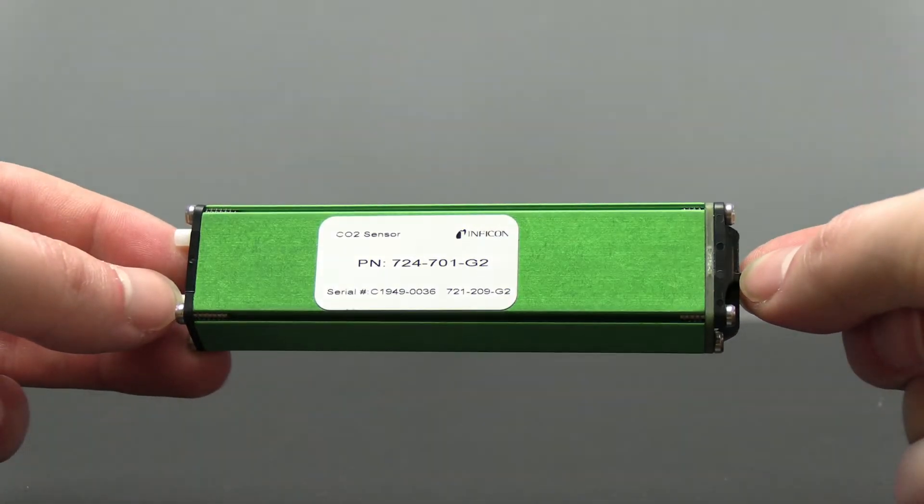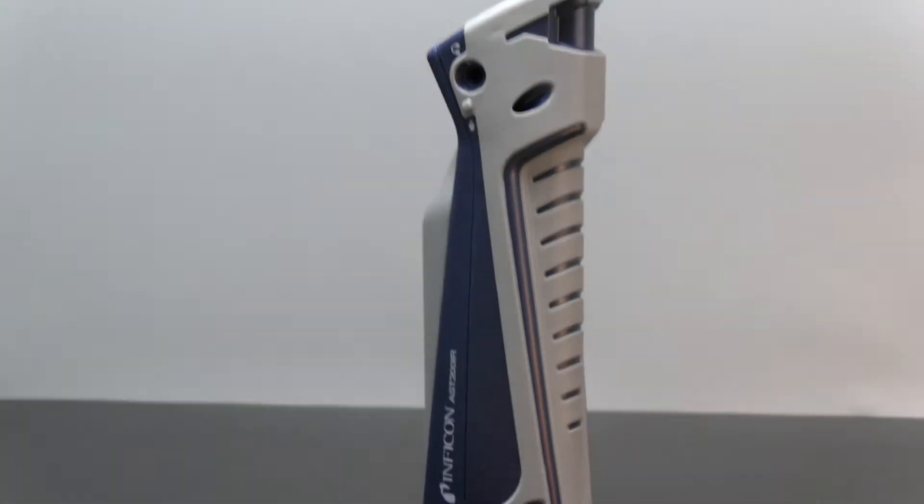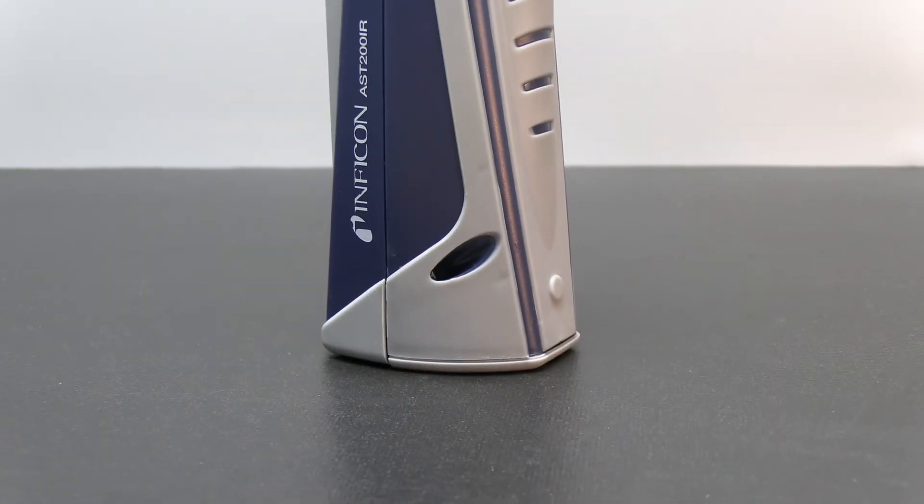To replace either the sensor or the battery remove the battery door by pressing the eject button on the back of the unit.